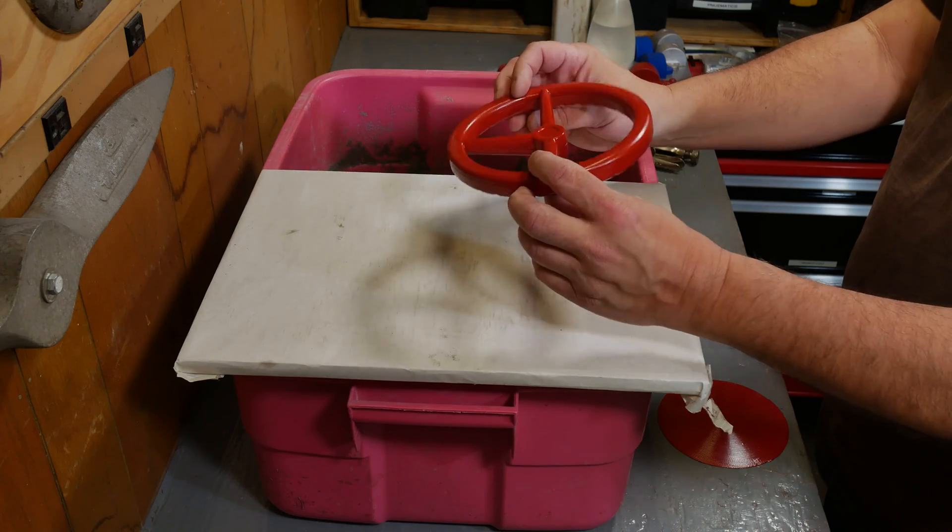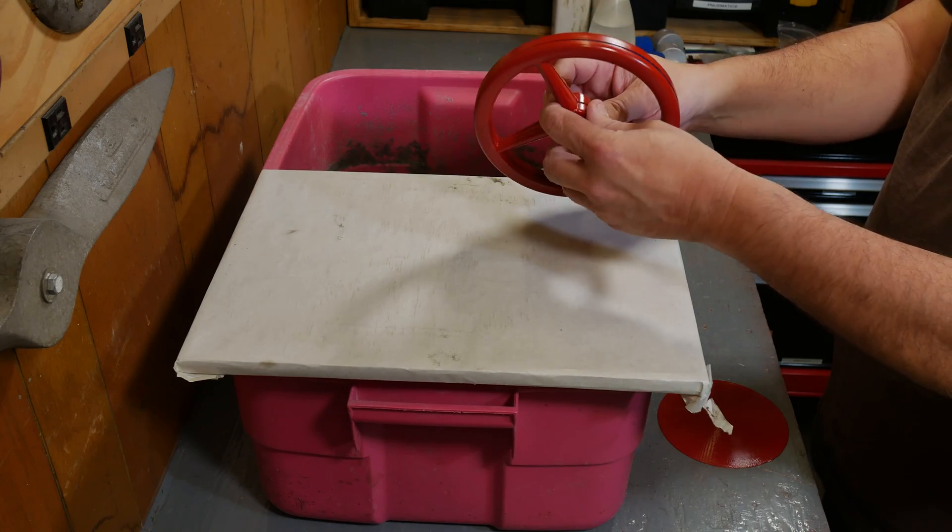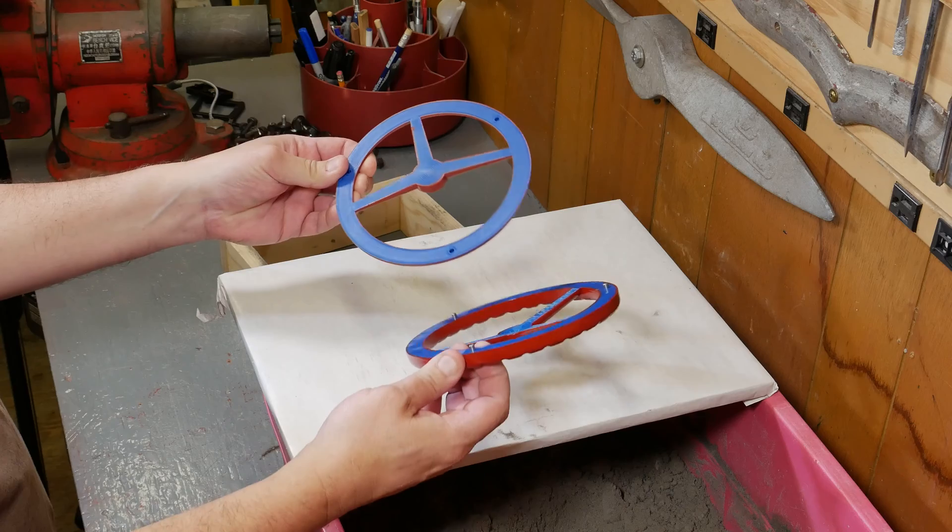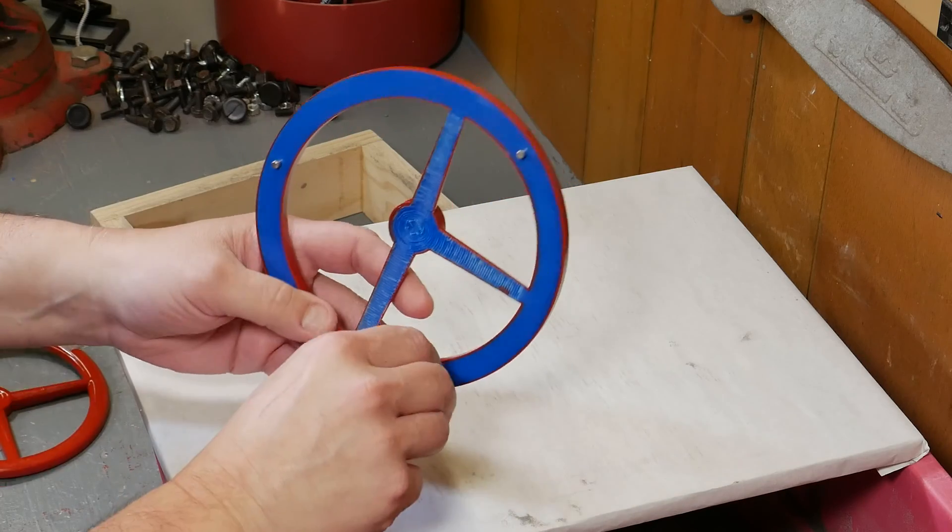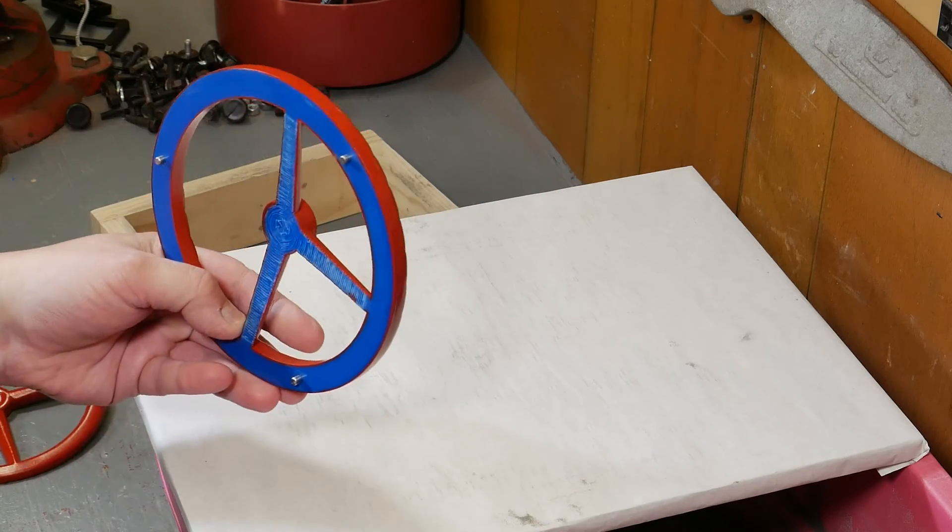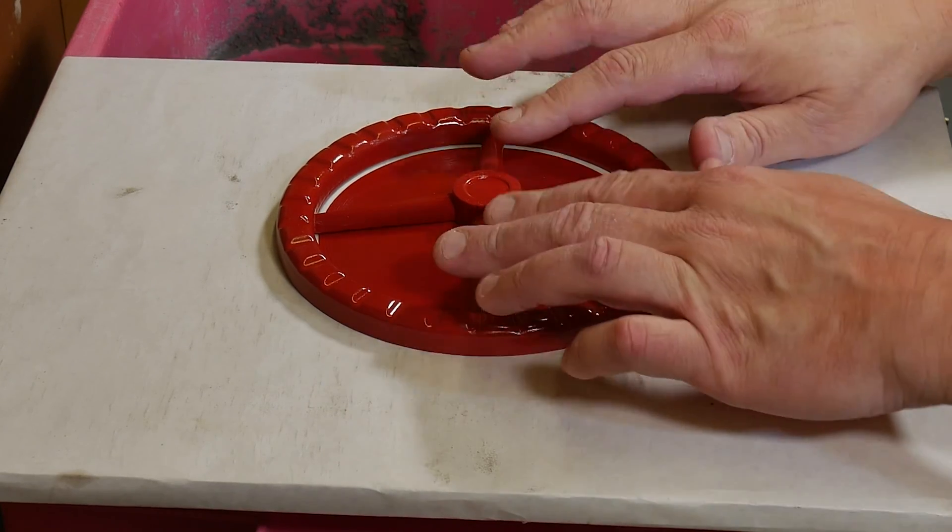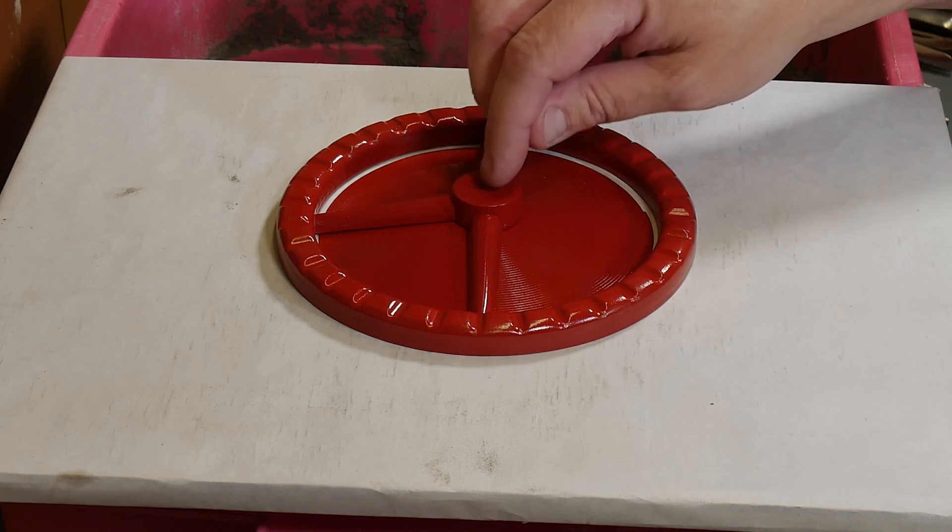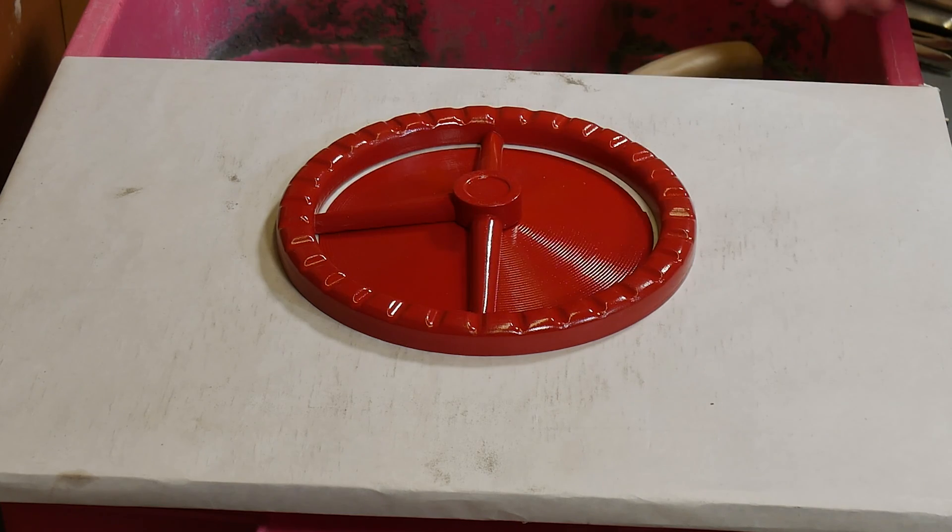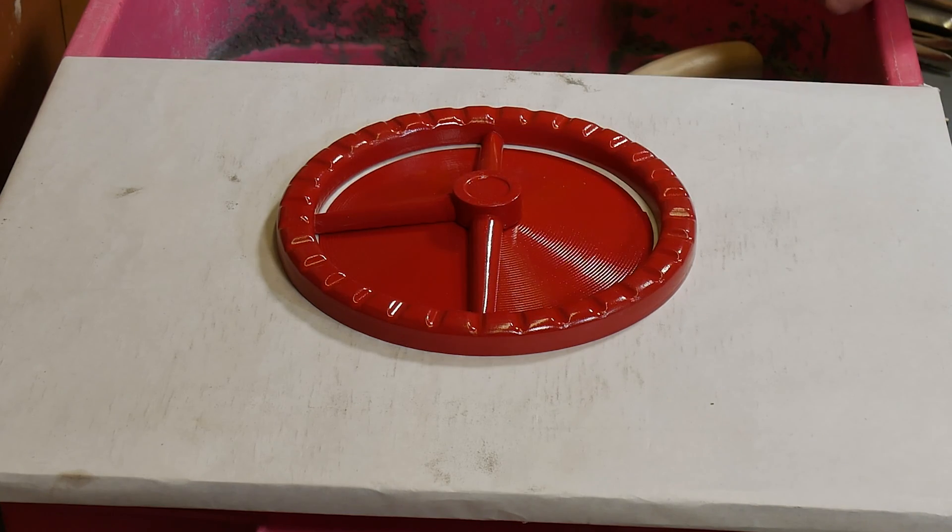It's finally time to start ramming this up. This is our new two-piece pattern pinned together. Hopefully this is going to work for us. I've got these pins out of here. This is what's known as a follow board. It's designed to support these thinner sections up here that might get damaged when we're pounding the sand in, but it does another thing.